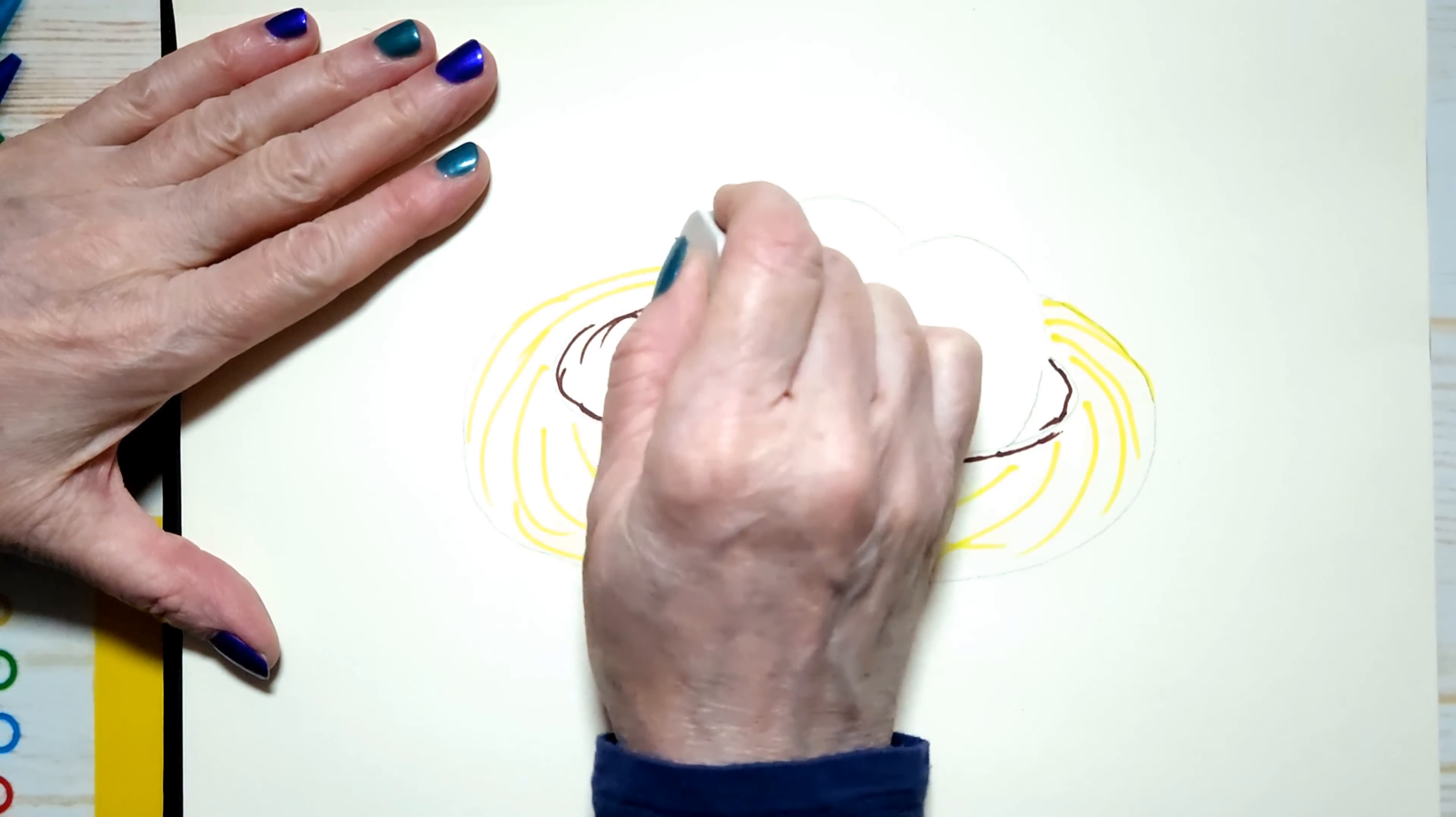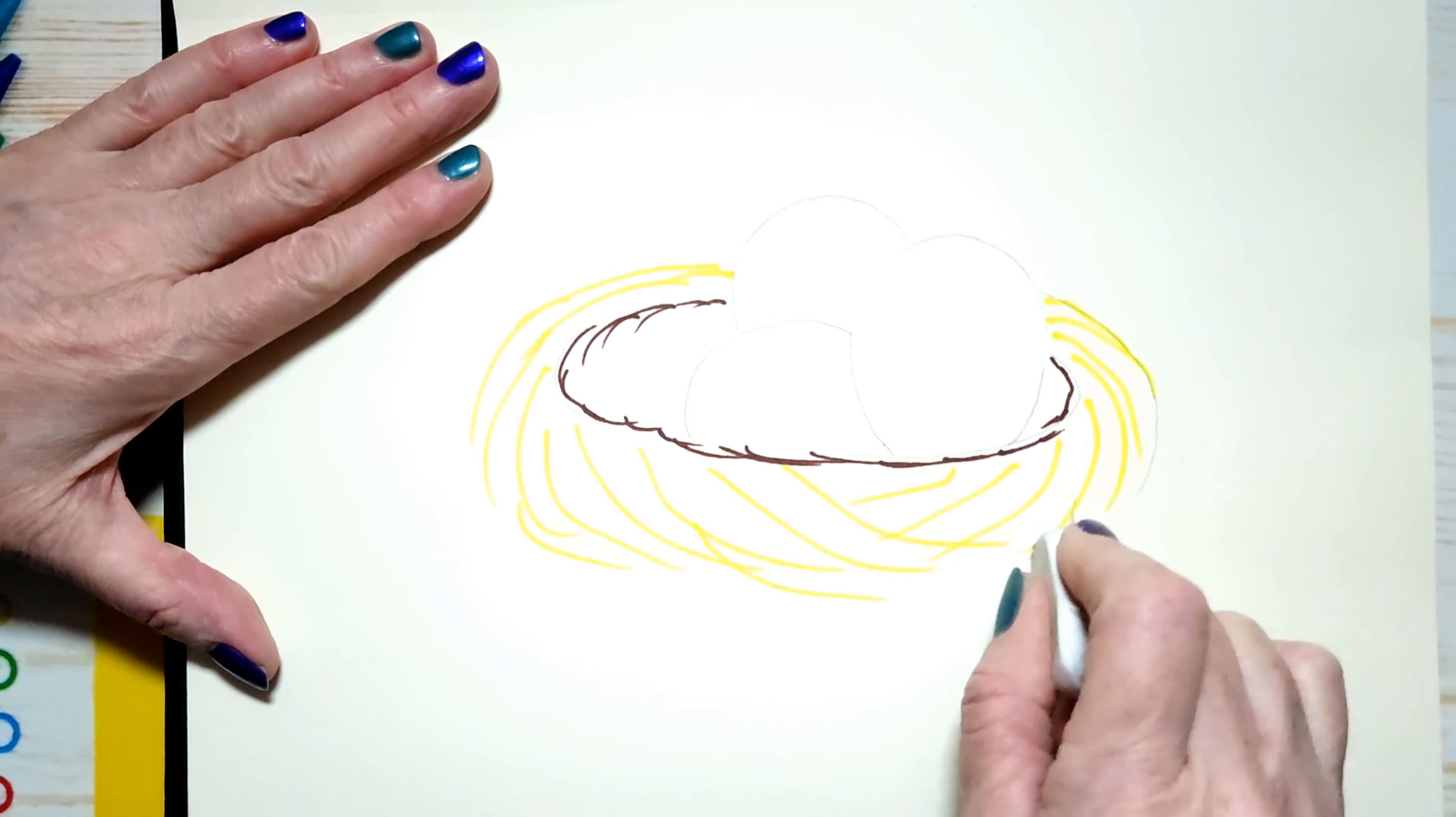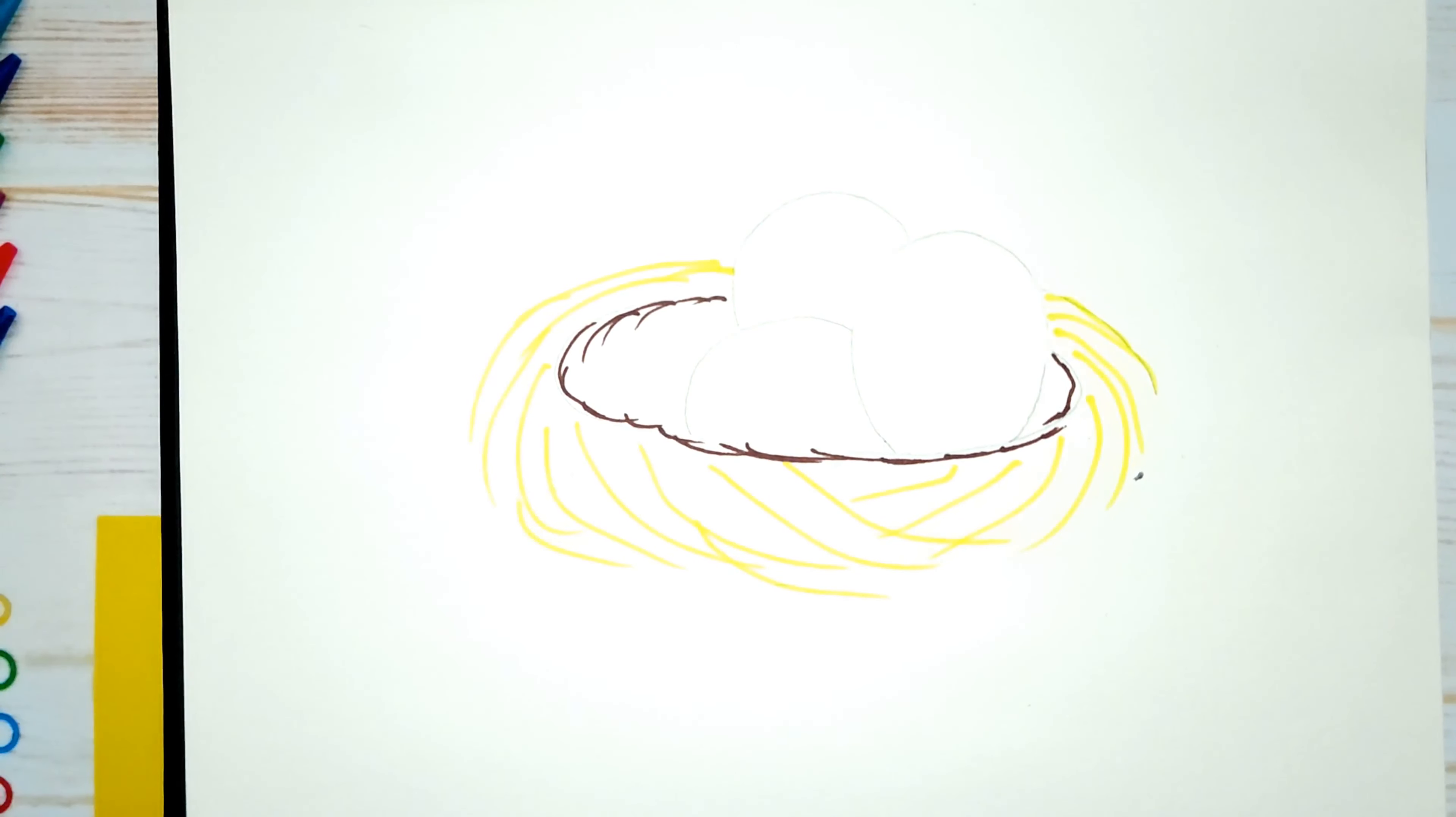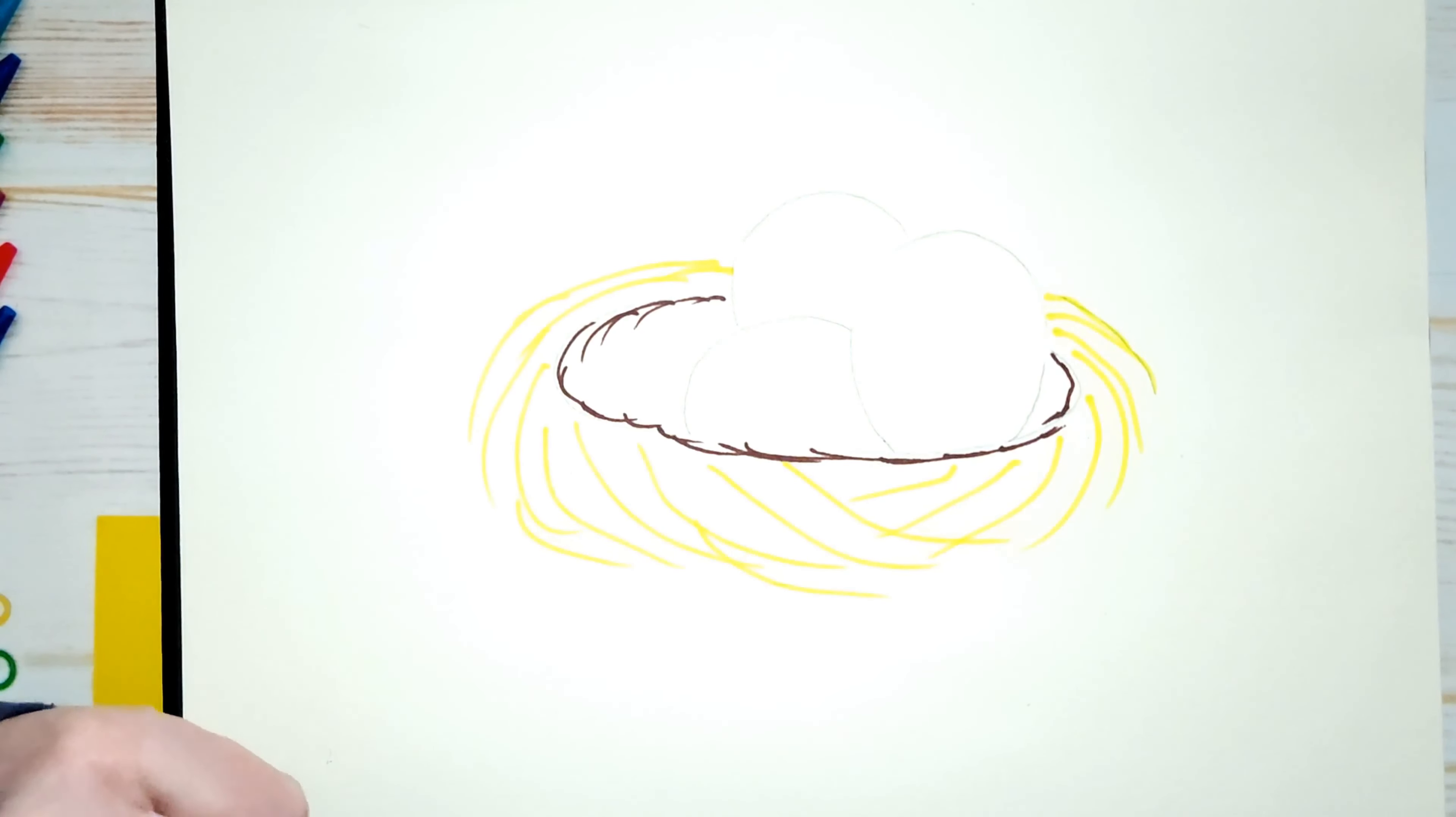But I want to erase my pencil marks that I used to shape my nest. Now what happened here is that I can't erase the pencil mark because the Sharpie went over it. That happens with Sharpies.